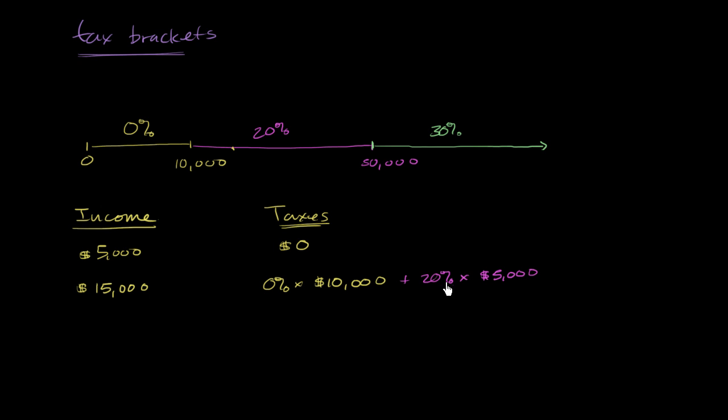So they'll pay, this is just 0, 20% of $5,000. They will pay $1,000 in taxes. Now, the misconception that many people have is, oh, well, $15,000 puts me into this middle bracket, so I'm going to have to pay 20% on all $15,000. And that's not the way it works. You only pay 20% for the increment that throws you into that bracket, so just for the $5,000.